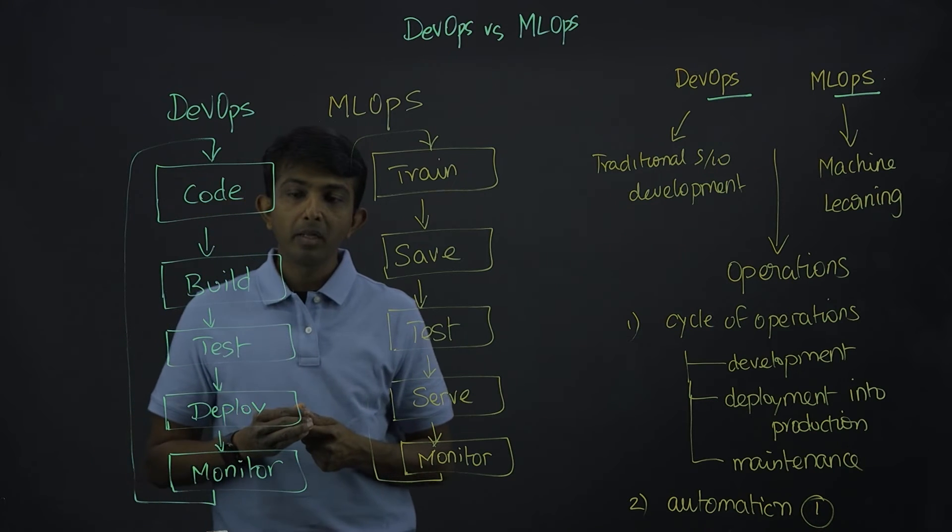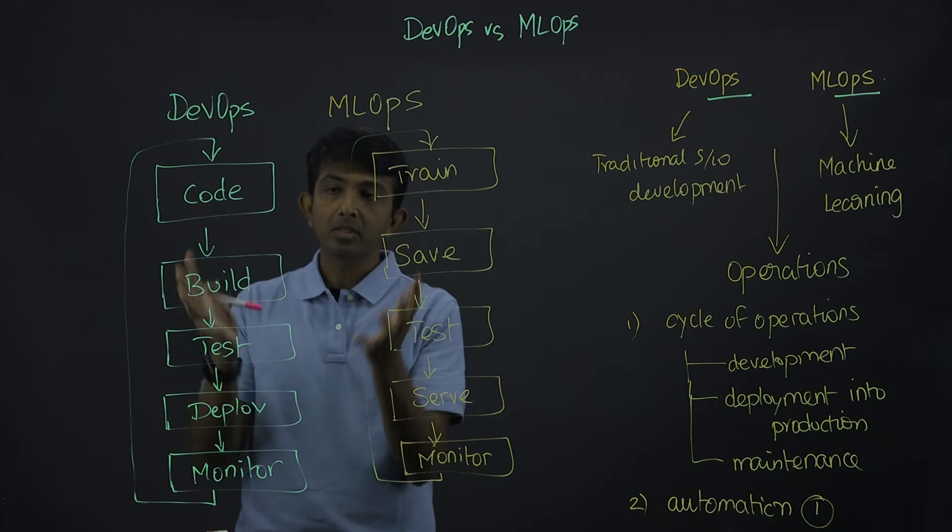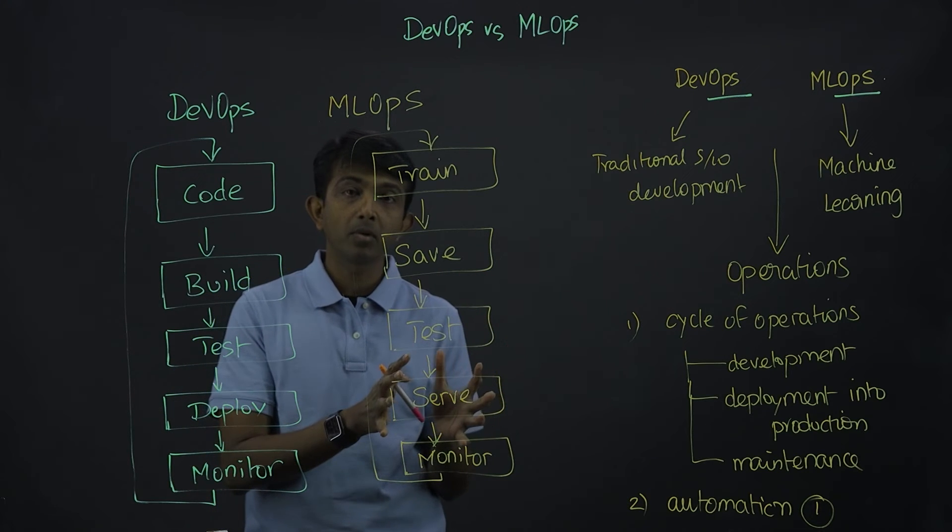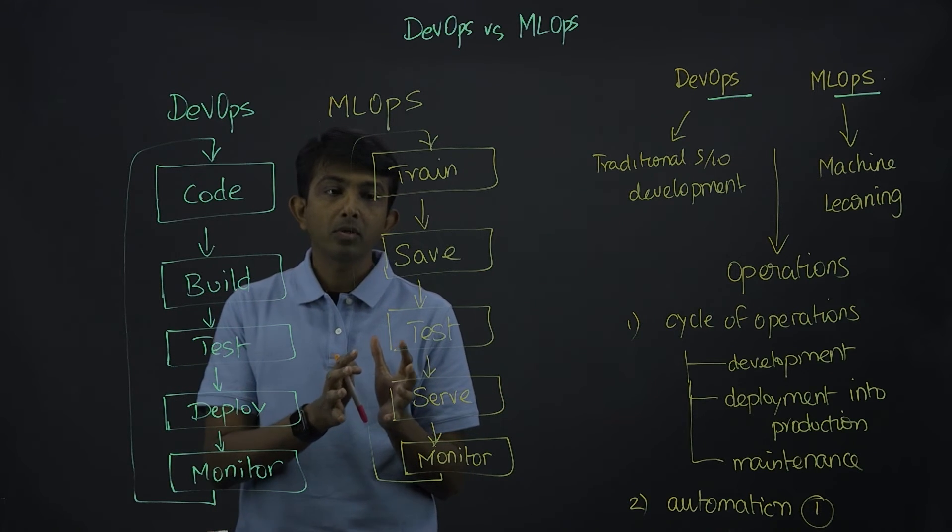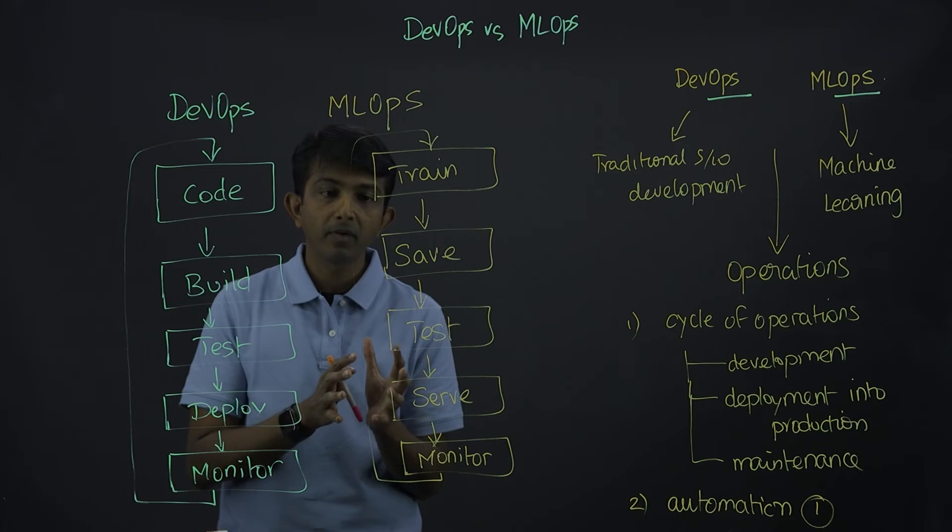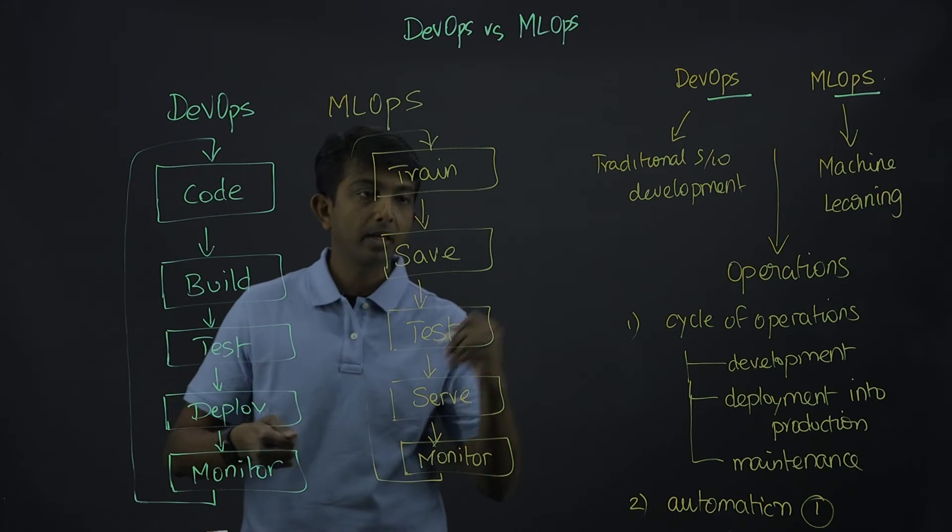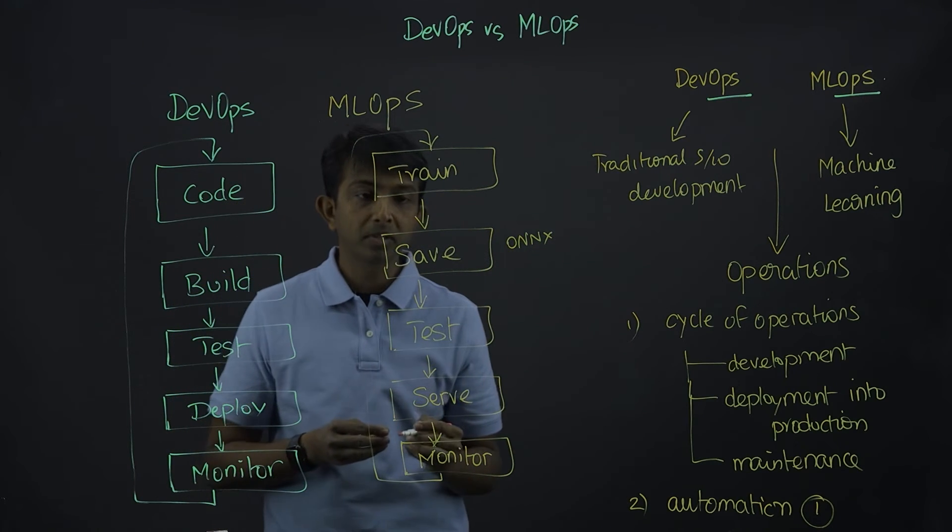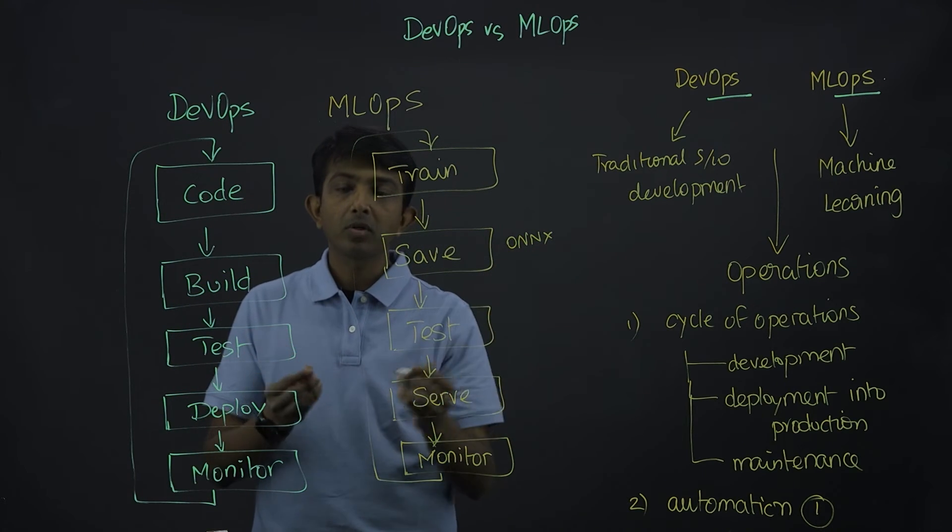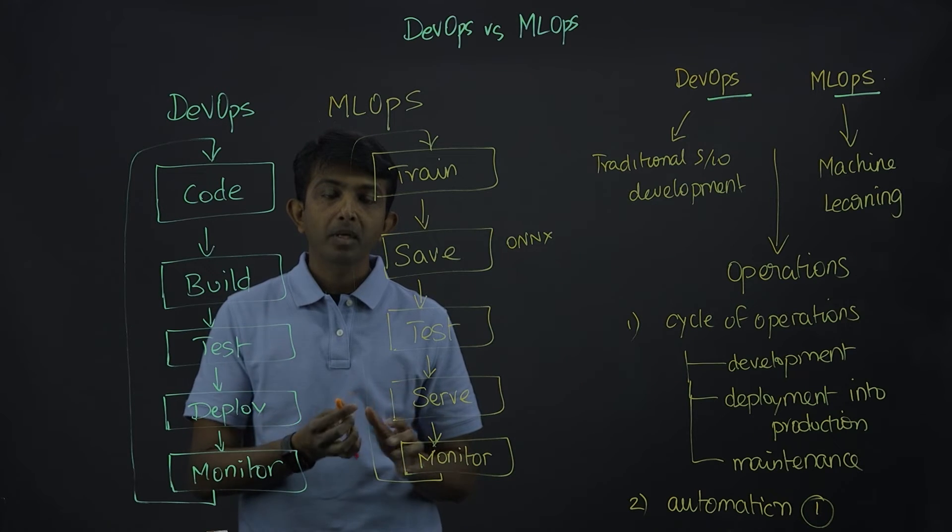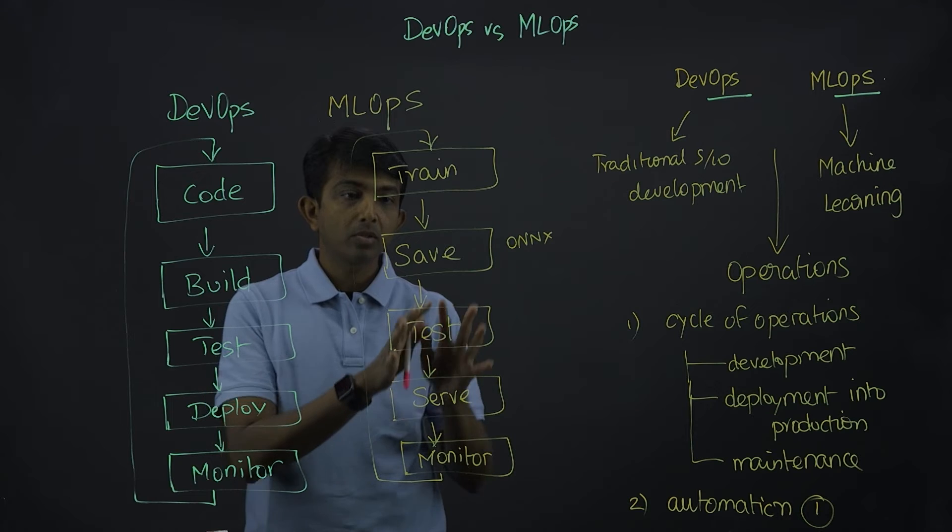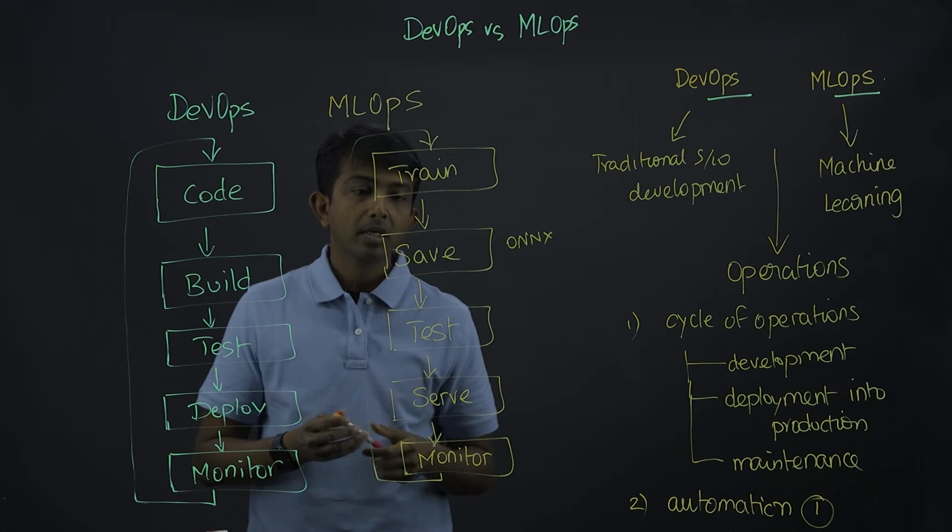Just like how you build the release artifacts, packaging everything together of what you've developed, you have the machine learning model here. You want to make sure it's consumable in the form of a standard format, like ONNX, or it could be in framework-specific format. But eventually, you are saving the model and pushing it to an external storage, object storage, or local storage.